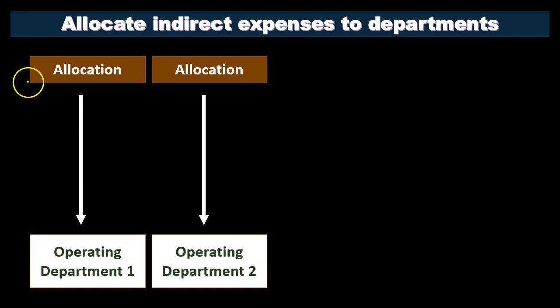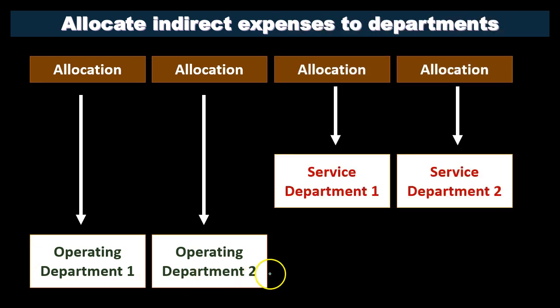Then we're going to allocate the indirect expenses to the departments. This is the more complex step, where we use our allocation methods and think about an activity base. We have to find some way to allocate the indirect expenses between operating departments one and two, and also between the service departments. We might use a very complex system with many different activity bases, or a simplified system using basically one activity base to allocate everything out.